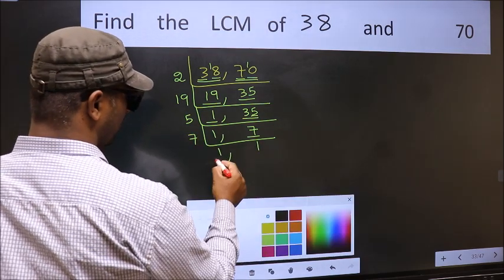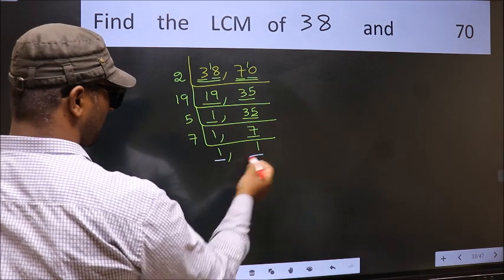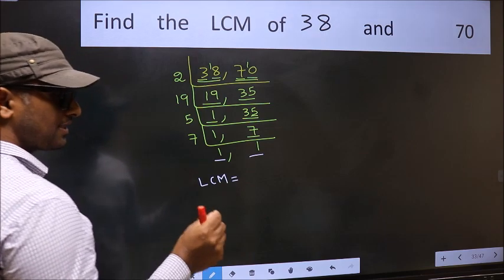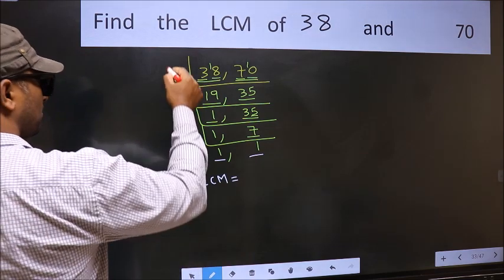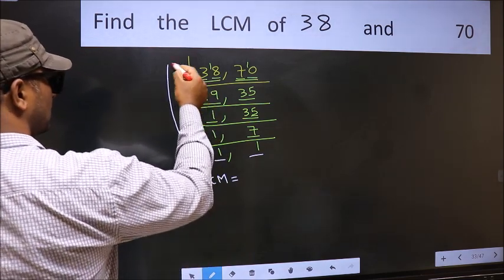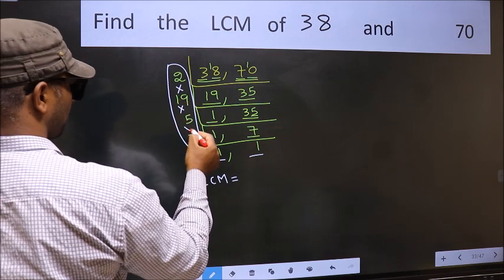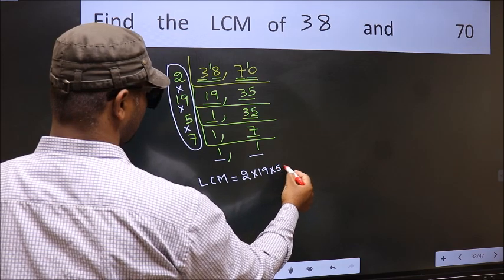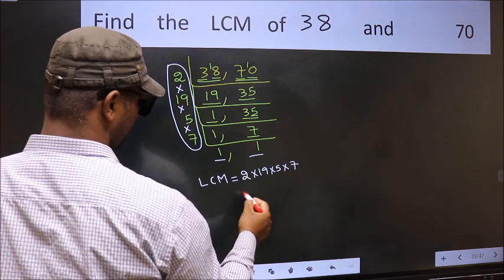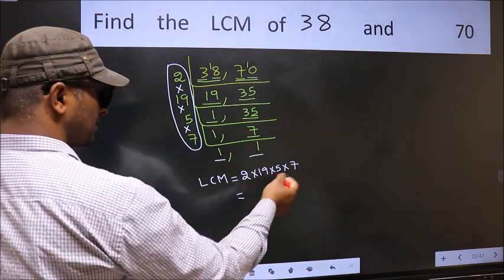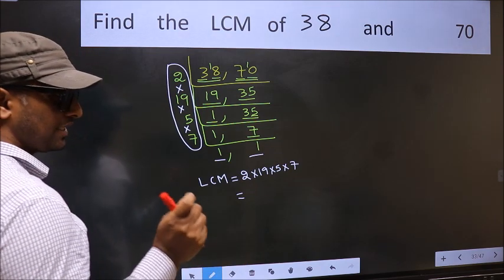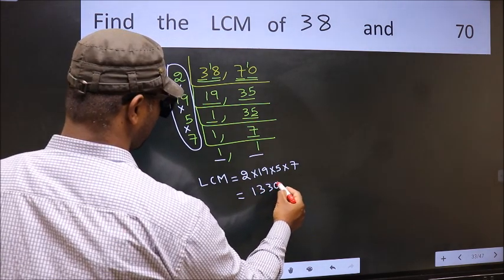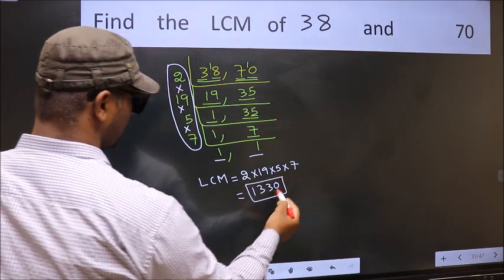So we got 1 in both the places. So our LCM is the product of these numbers. That is 2 into 19, into 5, into 7. When we multiply these numbers, we get 1330 is our LCM.